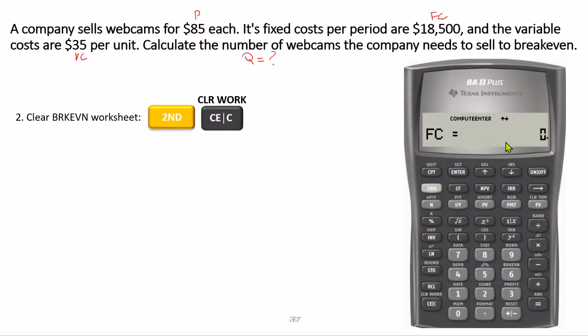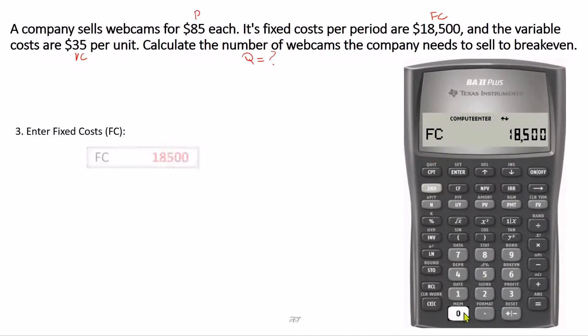Now we start entering the values. The fixed cost is $18,500. We type in $18,500 and then press enter. Now use the down arrow key to go to the next variable, which is variable cost per unit. Variable cost per unit is $35. We type in 35 and then press enter.